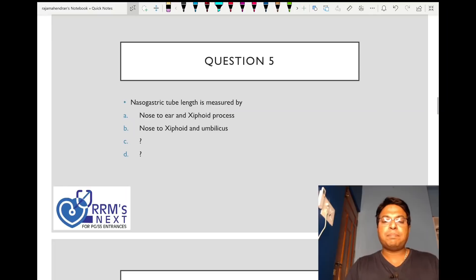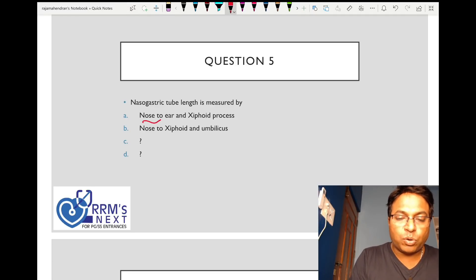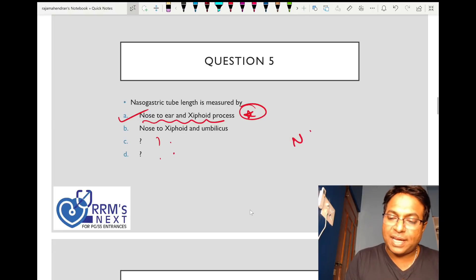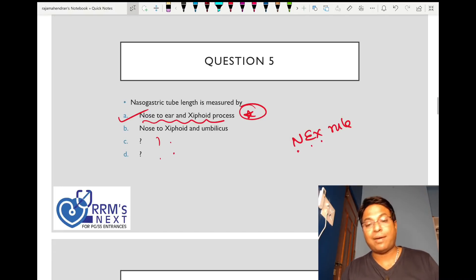This is a simple question. Nasogastric tube length is measured by this. A repeat question, very favorite for national board examiners. You measure from nose to ear to xiphoid process. This is the NEX rule for adults: nose, ear, xiphoid. This is a repeat question we've already discussed.